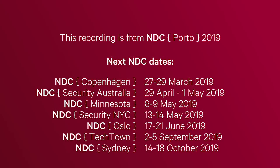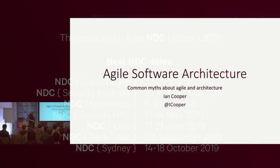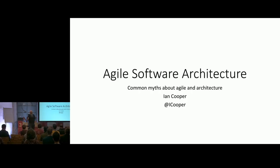This talk is about agile software architecture — what software architecture is, what architects do, what agile is, and how those two ideas mesh together.